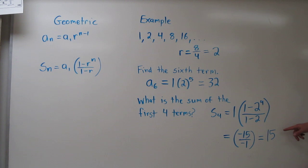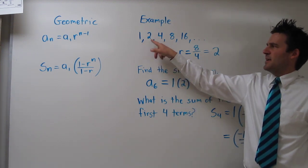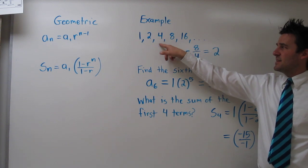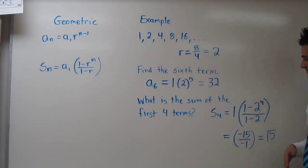So this formula says if we add the first four terms of our geometric sequence, we get 15. So let's see what happens. 1 plus 2 is 3, 3 plus 4 is 7, 7 plus 8 is 15. So it worked.